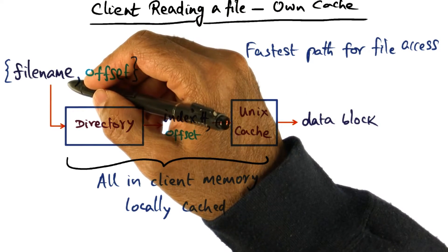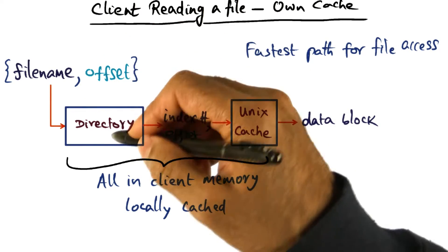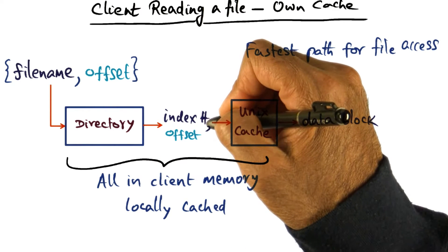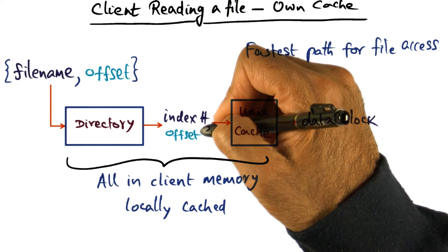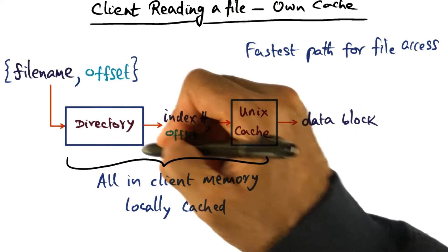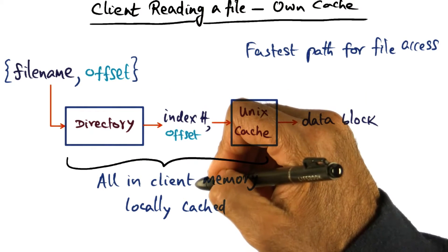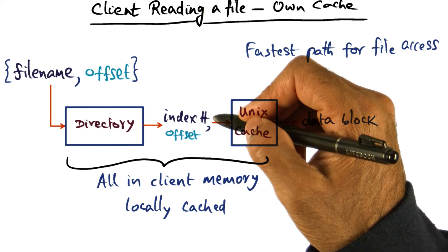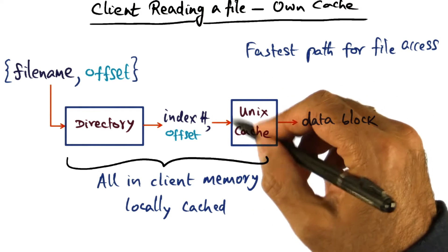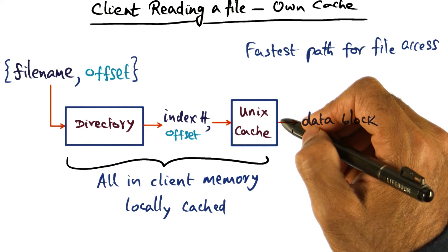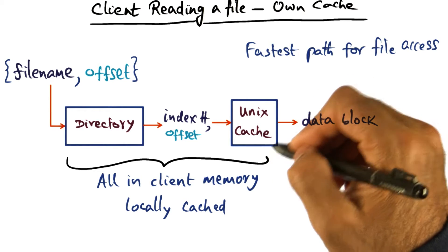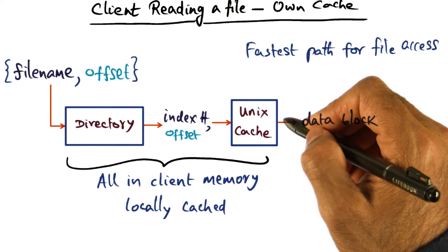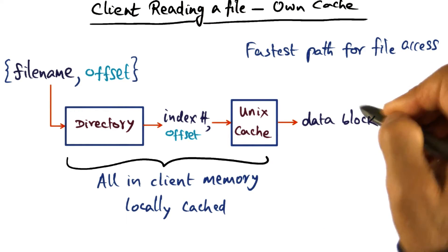So when you start with a file name and an offset on a client node, you look up the directory, and from that you get an index and an offset. This is the data structure which is in the client memory. And once you get the index and the offset, and if this file has been accessed before, it is most likely in your own Unix cache. This is a file cache of the file system, and if it is in your cache, then you get the data block.